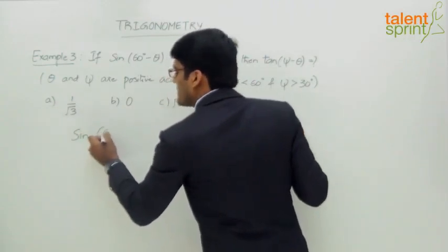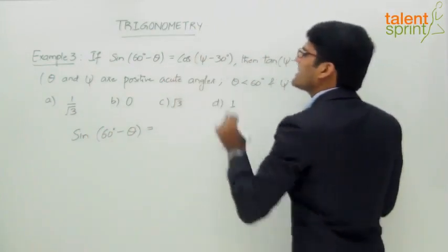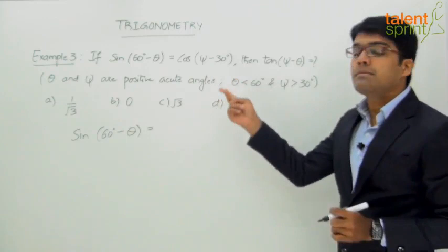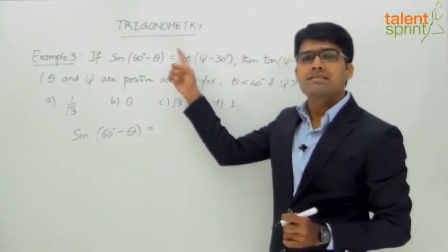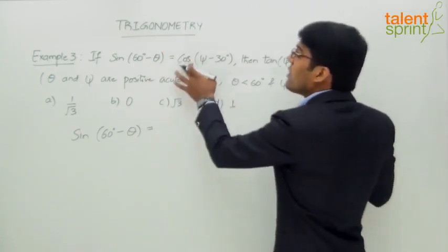The given equation is sin(60° - θ) = cos(ψ - 30°). Now the whole idea here is to get the same trigonometric ratio on both sides—either convert cos to sin or sin to cos. So let us convert this cos to sin. How can we do that? This cos of...